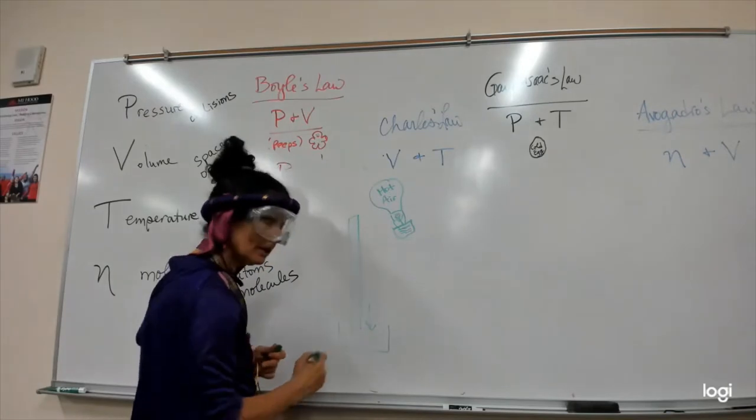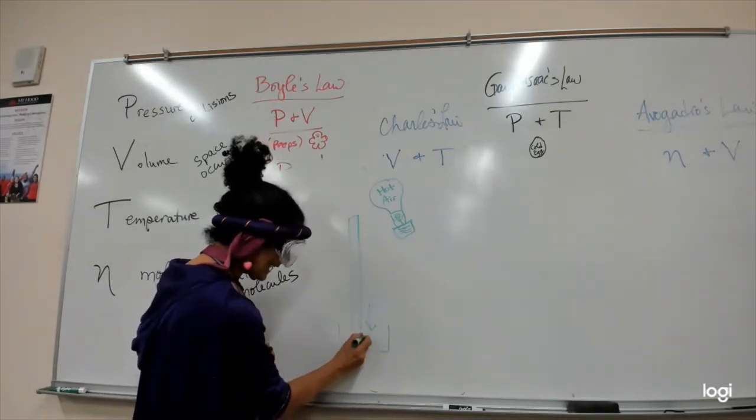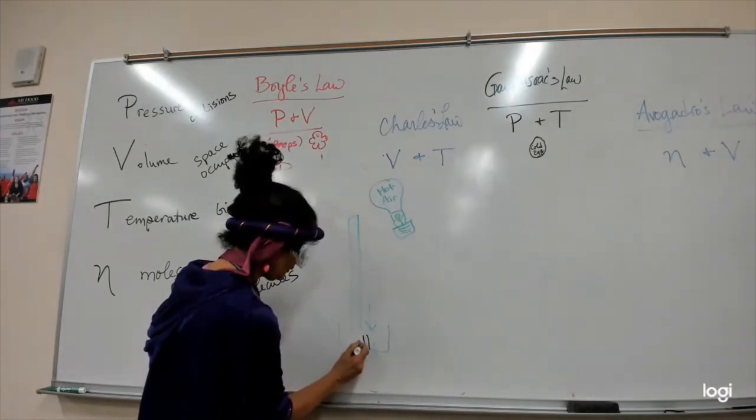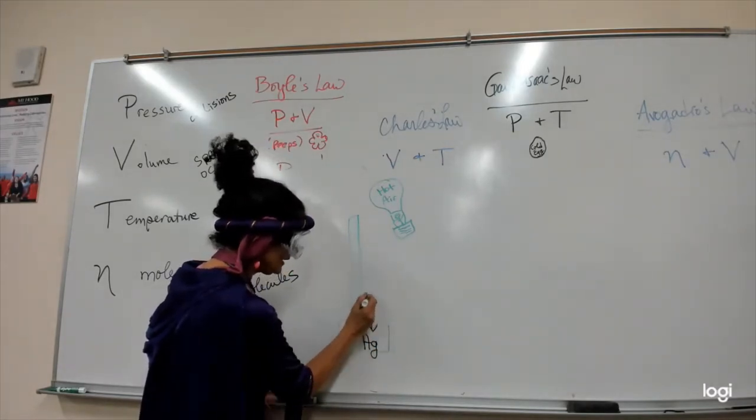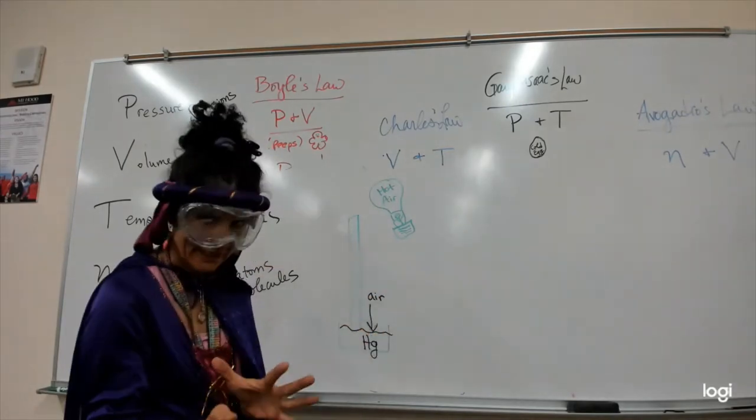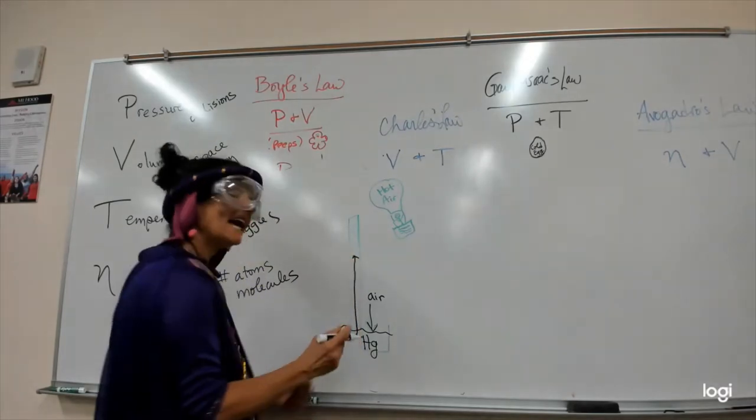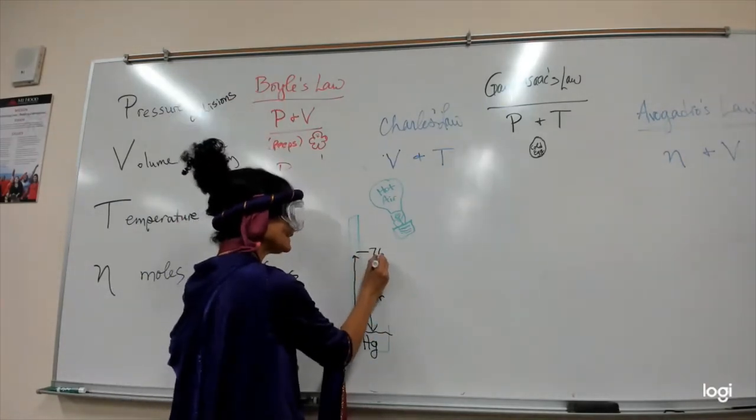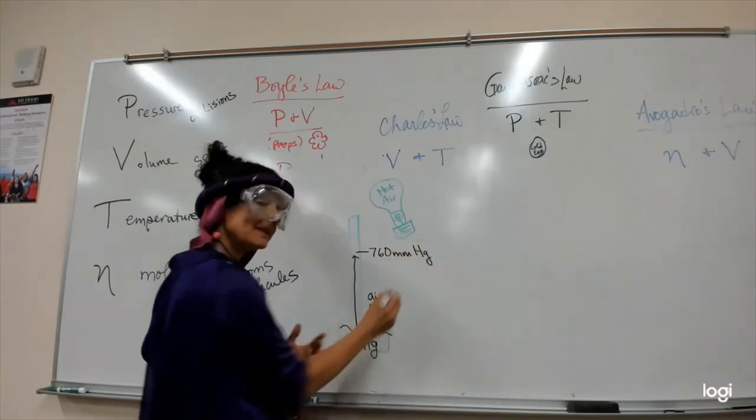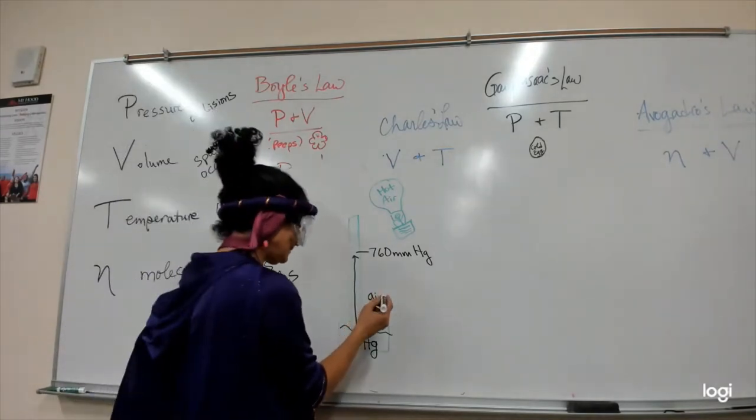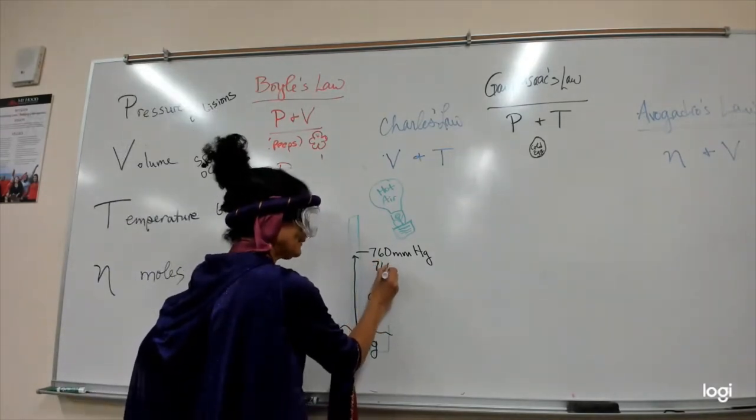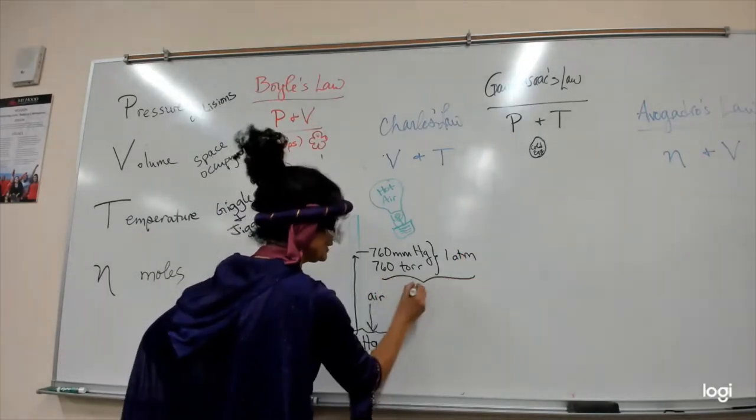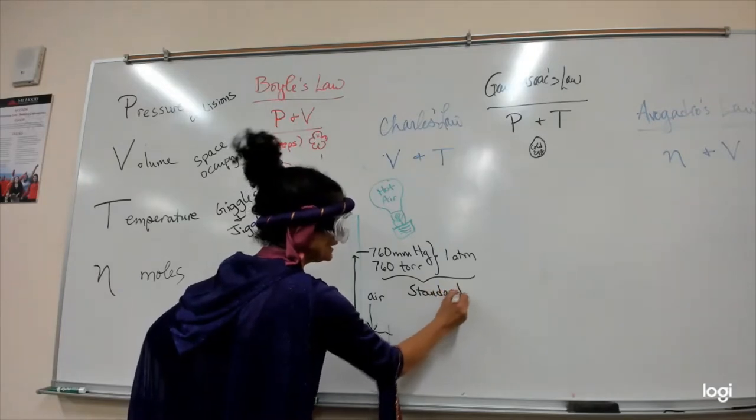This gentleman, Torricelli made, I believe it was him, made the first barometer. We'll say the mercury is in here. The air is pushing down on the mercury that's in here. The mercury is a liquid. The air pushes down on it, and the mercury rises as much pressure as the air is pushing down. If it is a perfect day at the seaside, it will rise to 760 millimeters of mercury high. 760 millimeters of mercury equals 760 Torr, which equals 1 atm. This is considered standard pressure, the standard number of collisions on a perfect day.